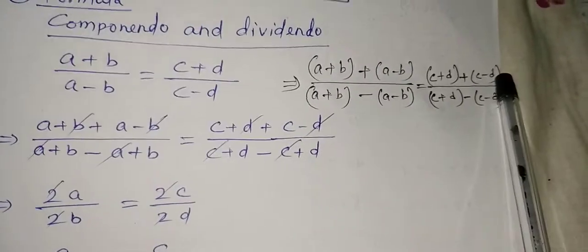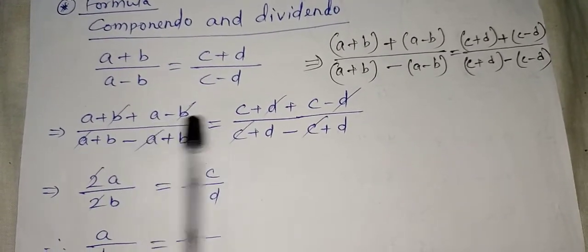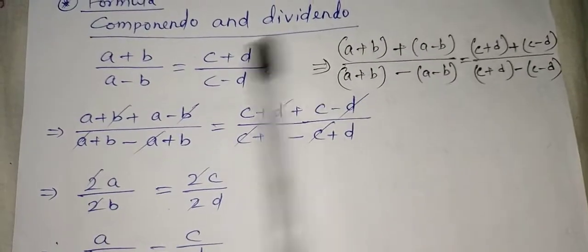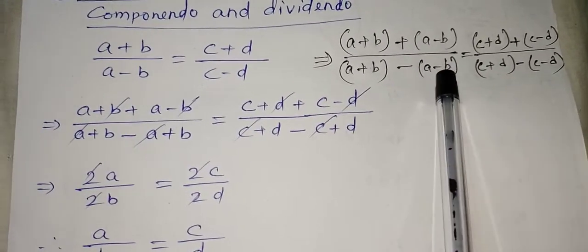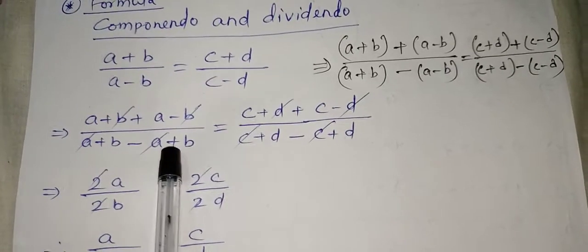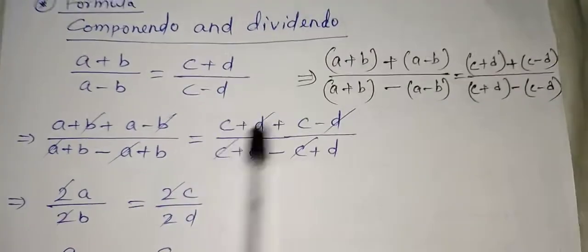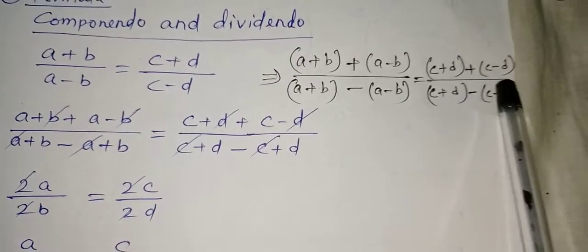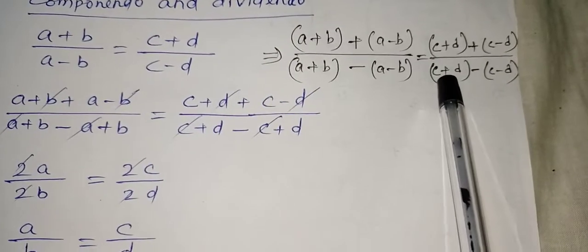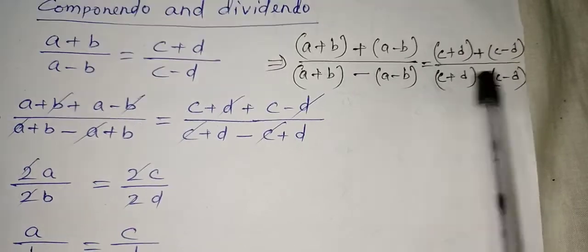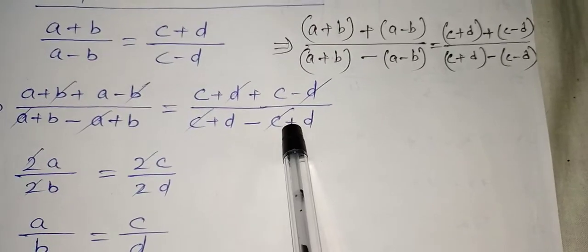After opening the brackets, we get: a + b + (a - b) on the top, and a + b - (a - b) on the bottom. Opening the bracket with plus changes nothing, so (a + b + a - b) stays the same. But opening the bracket with minus means the minus signs multiply to become plus — so minus (a - b) becomes (-a + b). You can see this minus has become plus.